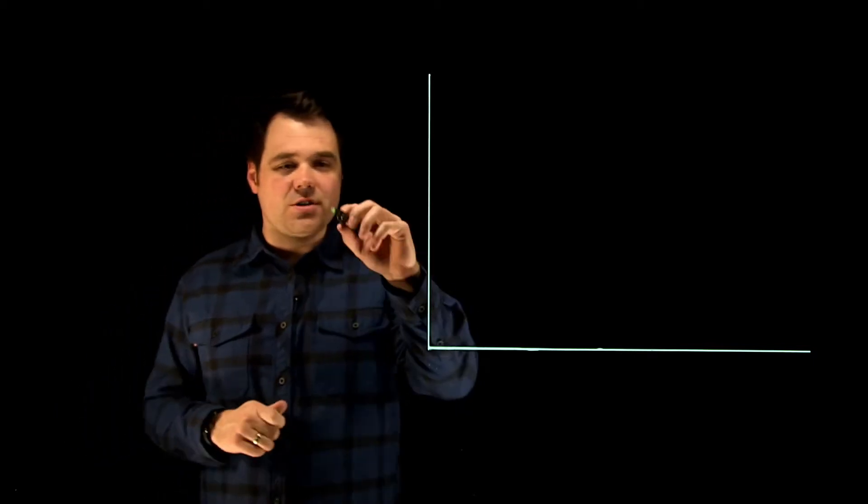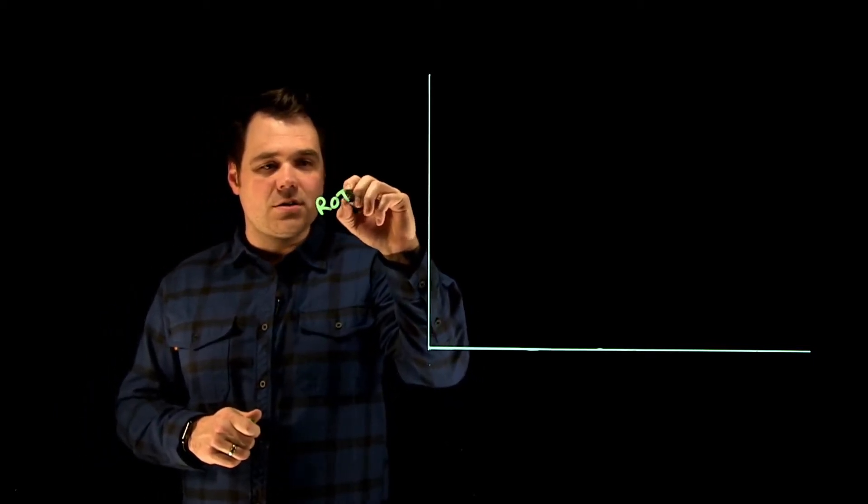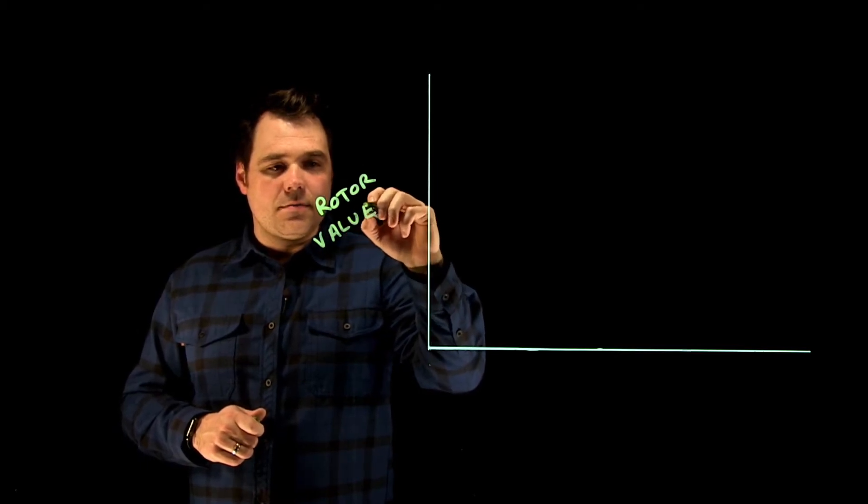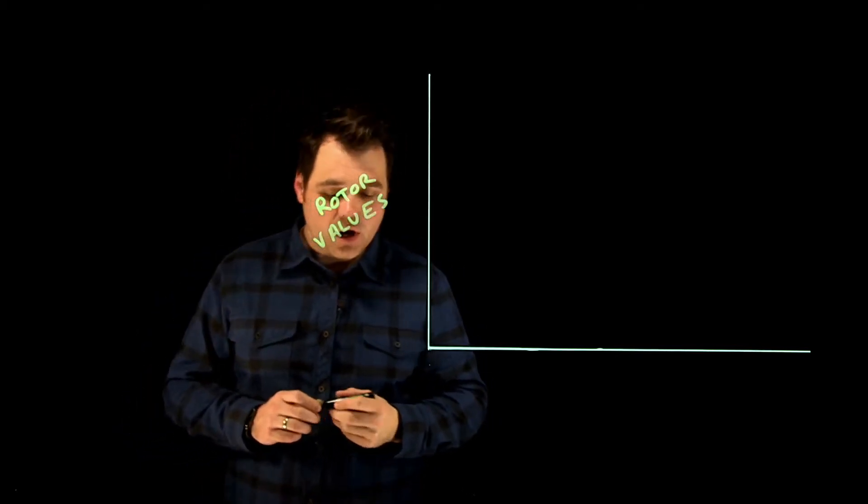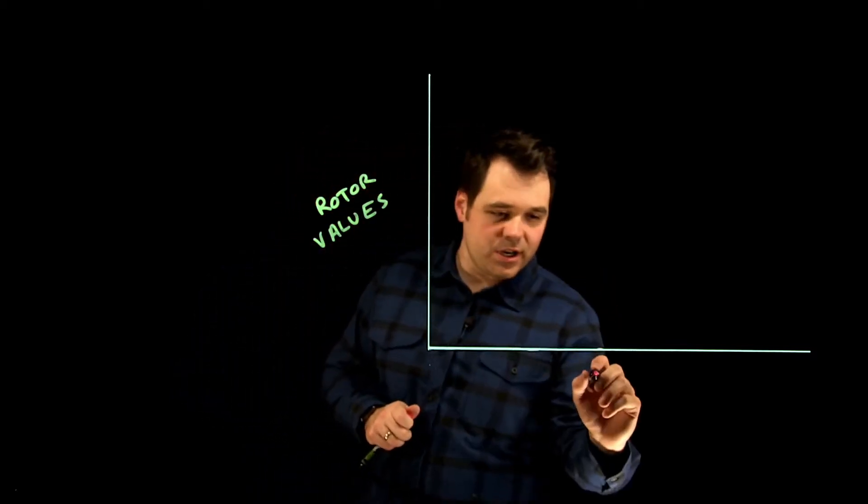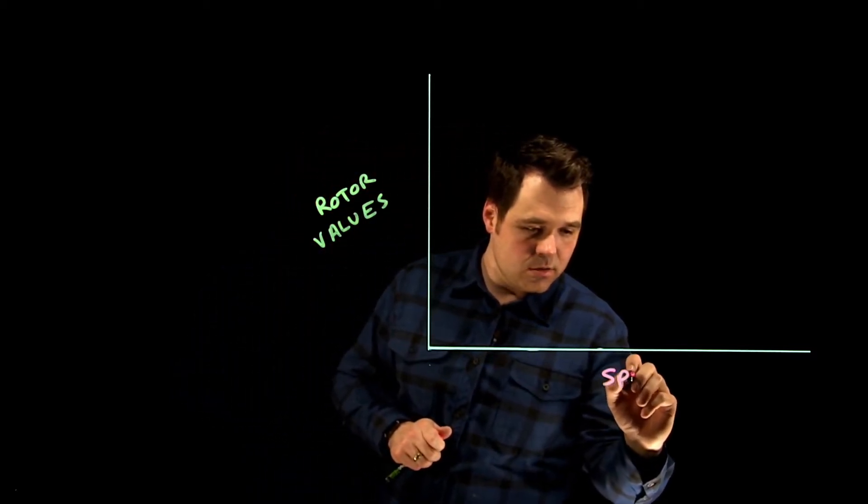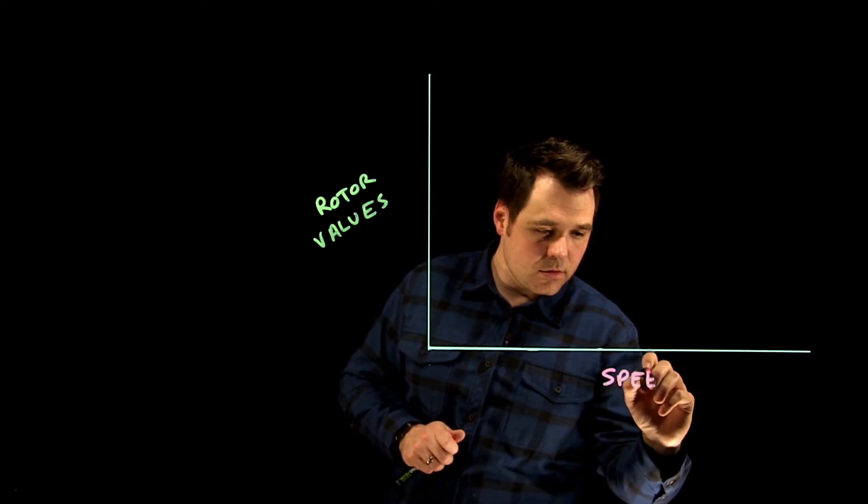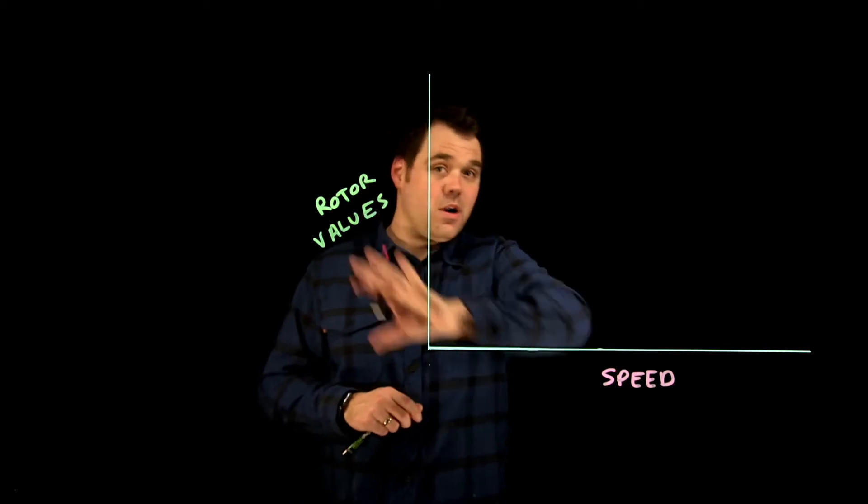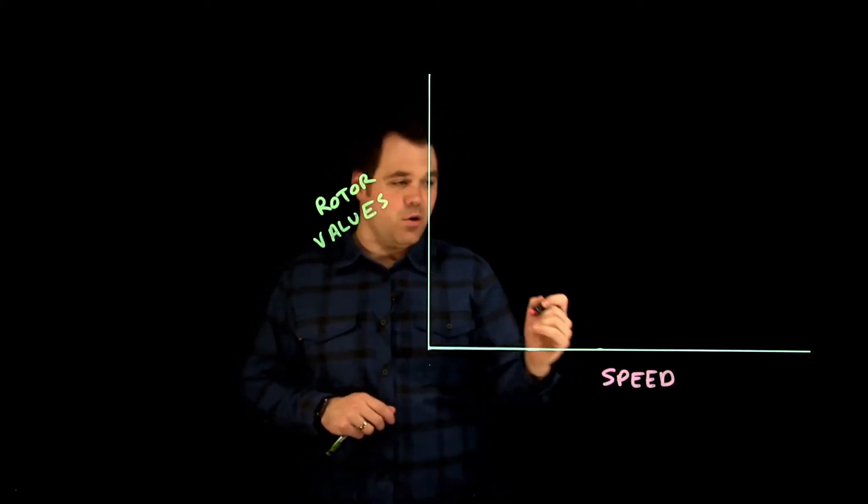What I'm going to put on this chart is this side is going to be my rotor values. And then down here, there's two ways to look at it down here. So we could look at it as speed, the actual speed of my rotor. So this is all rotor, everything on here is rotor. So the speed of my rotor.